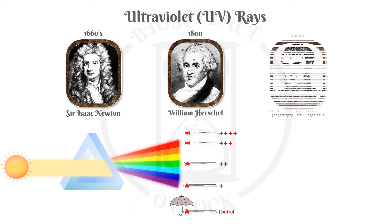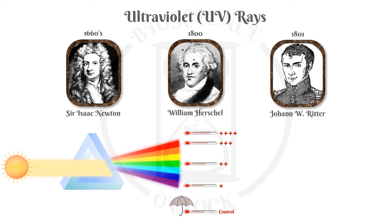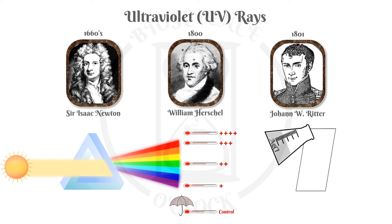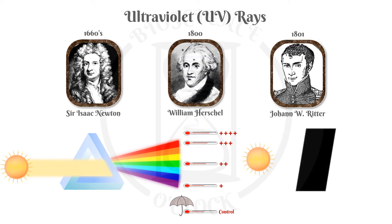One year later, in 1801, inspired by Herschel, Johann Ritter believed there were also invisible rays on the opposite end of the spectrum where Herschel had found the infrared rays. Inspired by the experiments from Carl Scheele, he used a piece of white paper and coated it with silver chloride. He knew from Scheele that under sunlight the paper would darken, and that the strongest darkening occurred under the violet light.